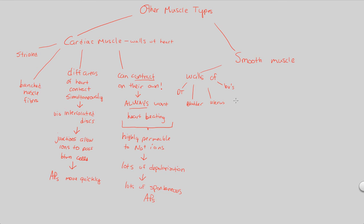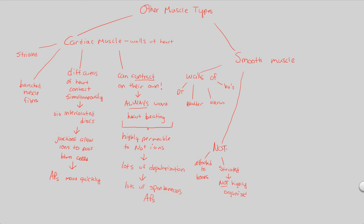The digestive tract, bladder, uterus, and blood vessels — we don't control these things. Therefore, smooth muscle will not be attached to bones, meaning it is not part of the musculoskeletal system. Also, smooth muscle is not striated — it's not striped — and therefore it's not highly organized; it's not in that highly organized sarcomere unit arrangement. It's much more simply organized. This gives two things very dissimilar between skeletal and smooth muscle: the lack of attachment to bones and the lack of striation.